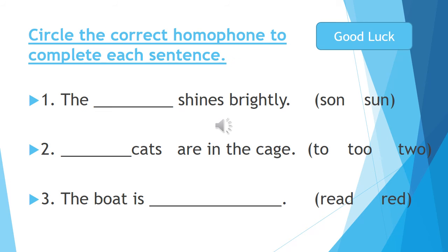Circle the correct homophone to complete each sentence. Number one: the blank shines brightly. In the bracket we have two words: son and sun. Which of the 'sun' are we talking about here that shines brightly?